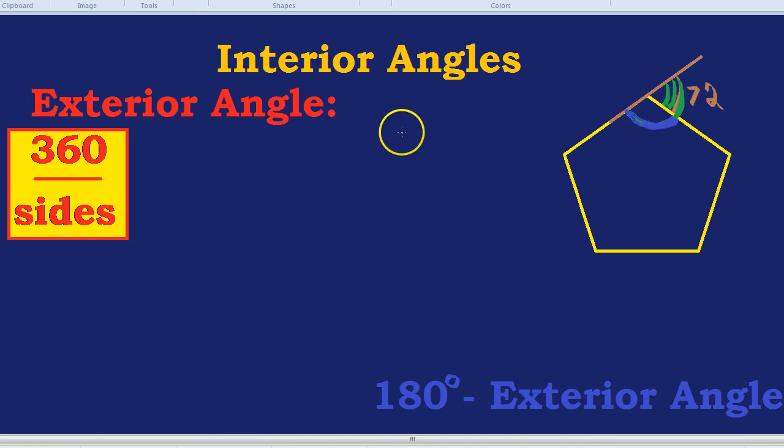In the case of a pentagon, we would do 72 degrees taken away from 180. So we do 180 take away 72. That would be 108 degrees. So the interior angle of a pentagon is 108 degrees.